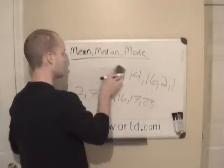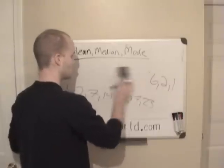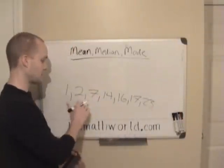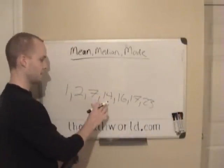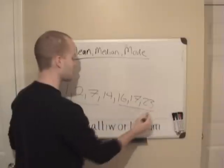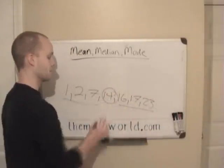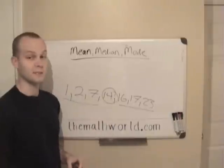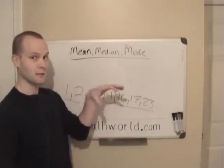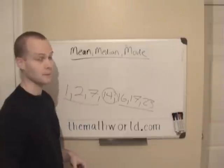We can get rid of the original ordering. You can see that there are three numbers before and three numbers after, and the number in the middle — 14 — is going to be the median. We're looking for the middle number in the set of numbers.